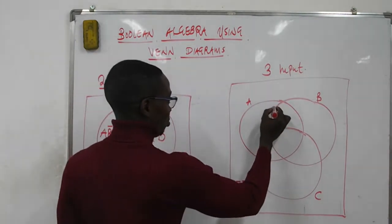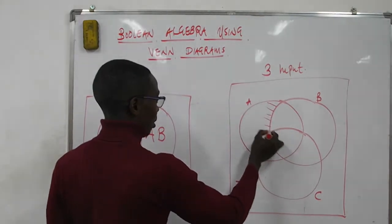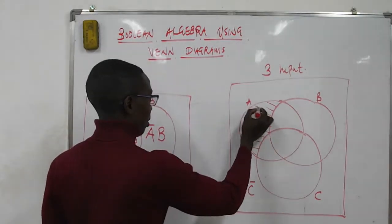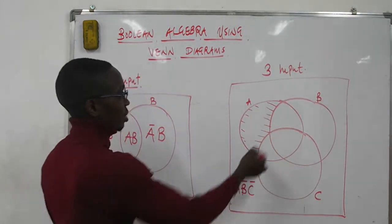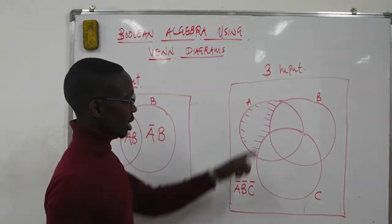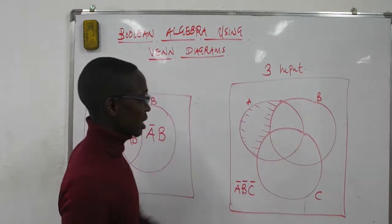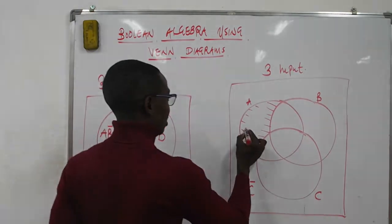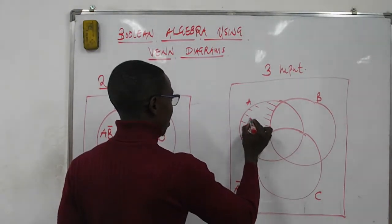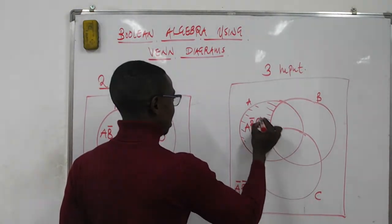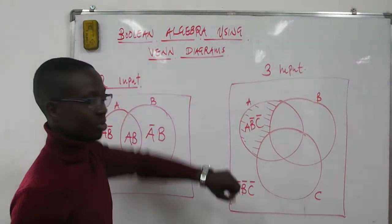When we come to this region here, this is a region where A appears, B does not appear, and C doesn't appear. So this region is A, B bar, C bar, because B and C don't appear in this region.